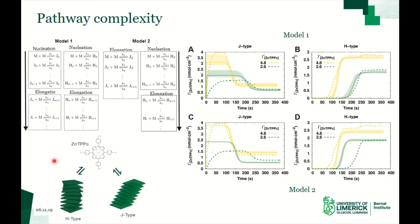Based on the previous results, we determined that the H-aggregate and the J-aggregate are competing for the free monomers available at the interface. Thus, we propose two models. In the first model, both aggregates J and H require a nucleus in order to be formed, whereas in model 2, only the H-aggregate requires a nucleus in order to be formed.